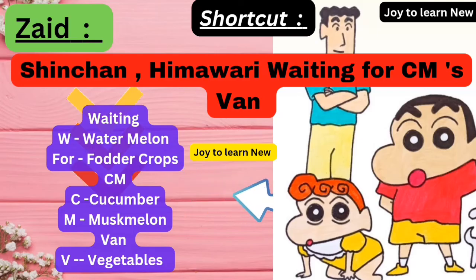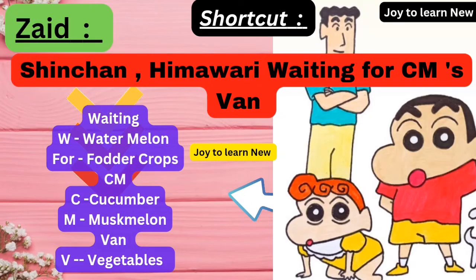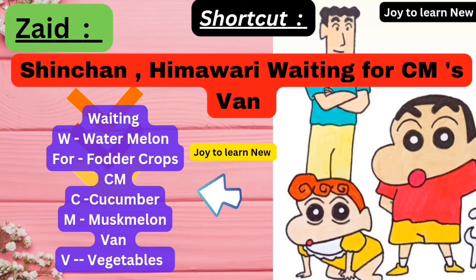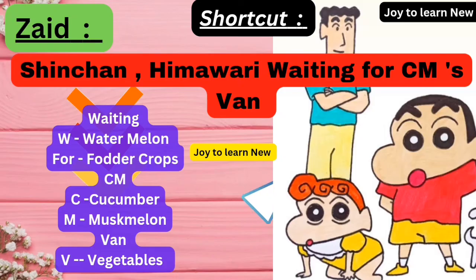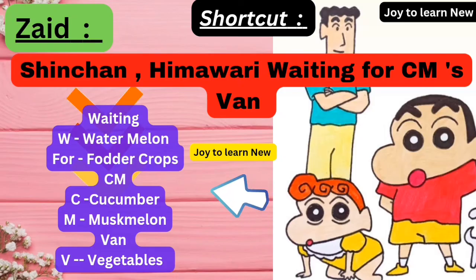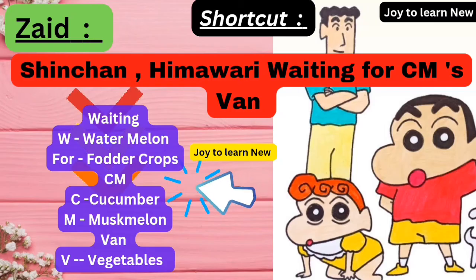For represents food or crops. CM — C represents cucumber, M represents muskmelon. Van — V represents vegetable. So remember the sentence: 'Chinchang and Himawari waiting for CM's van'. That covers all the important points about Zaid season.